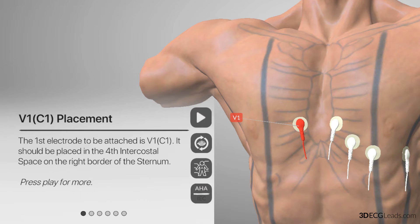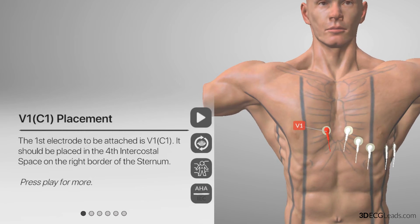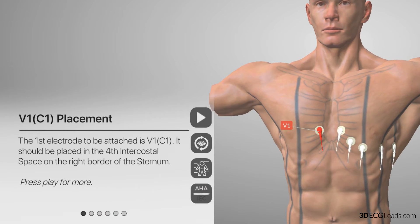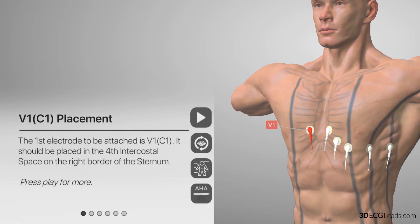The first lead you have to place is chest lead V1, and it is located in the fourth intercostal space on the right border of the sternum. To have a better view or understanding of this, we need to look at the anatomy.